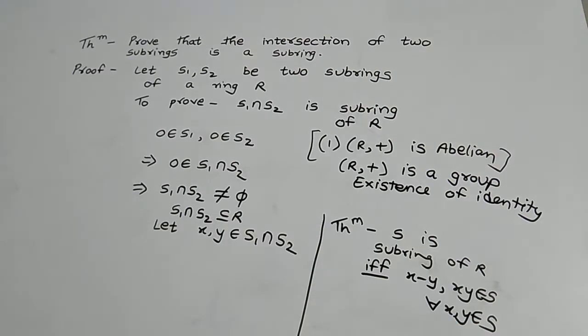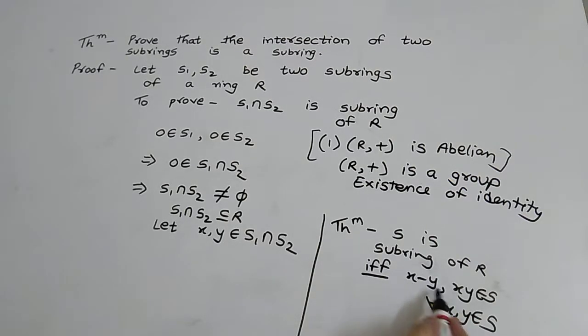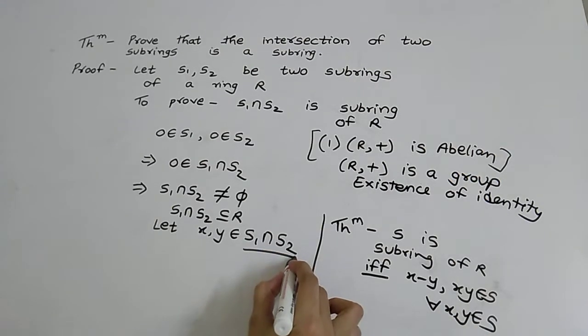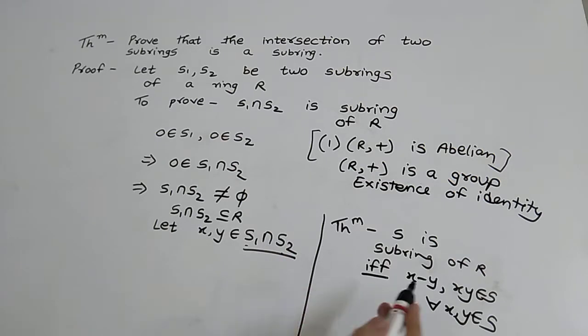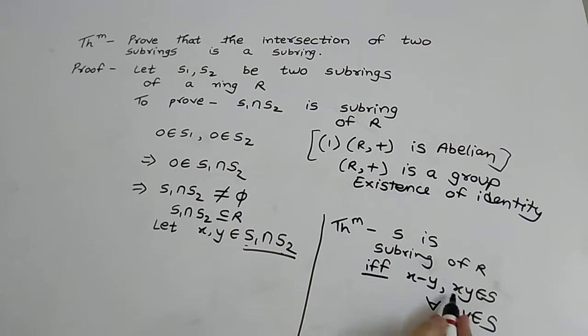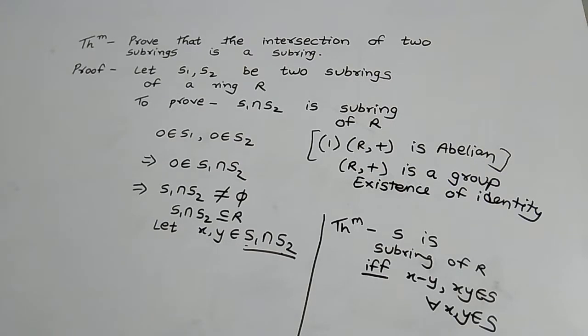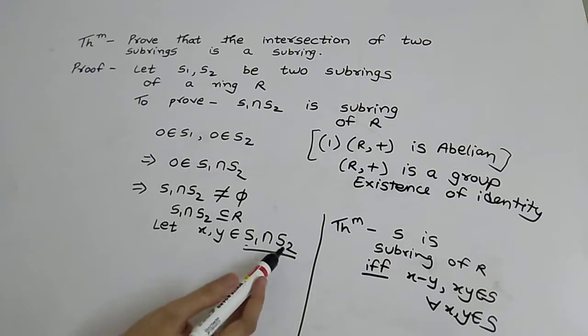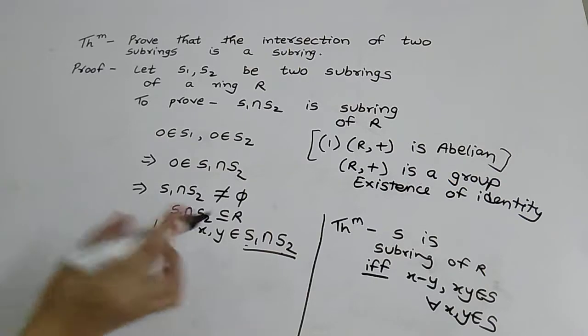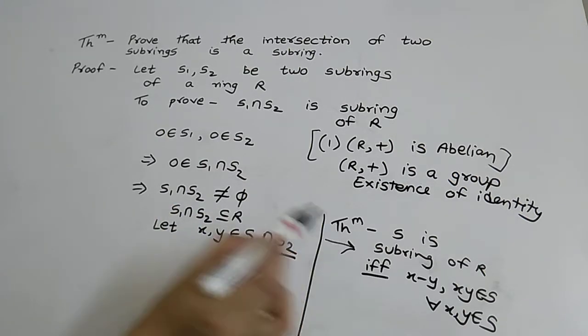So now we will show this condition: x minus y and x into y belongs to S1 intersection S2. If we show this condition, then it will be proved that S1 intersection S2 is a subring of R according to this theorem.